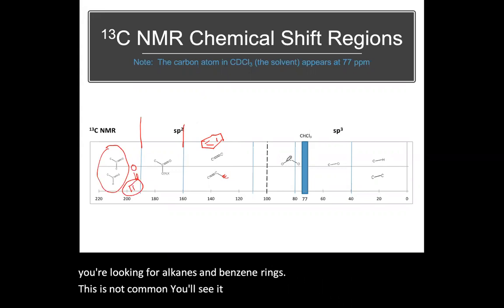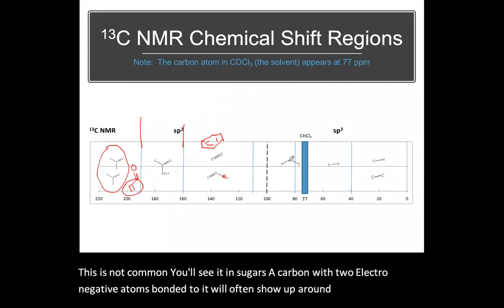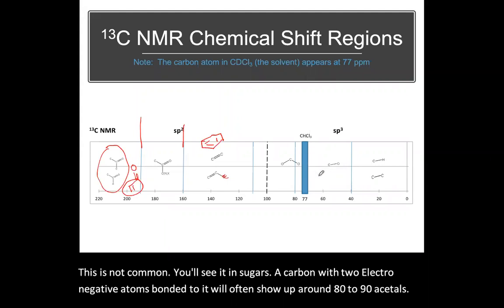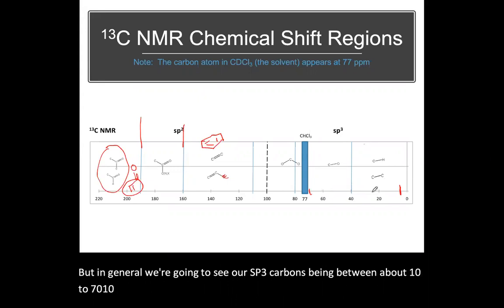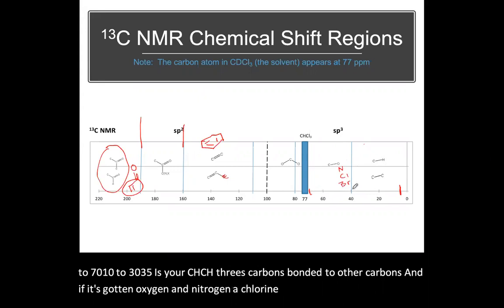You'll see it in sugars, a carbon with two electronegative atoms bonded to it will often show up around 80 to 90 acetals. But in general, we're going to see our sp3 carbons being between about 10 to 70. 10 to 40, 35 is your CHs, CH3s, carbons bonded to other carbons. And if it's got an oxygen, a nitrogen, a chlorine, a bromine, some electronegative atom, 40 to 70.